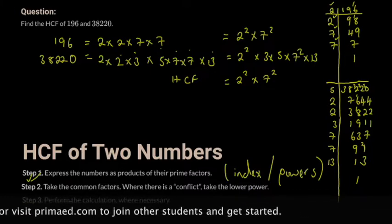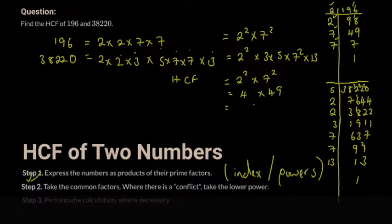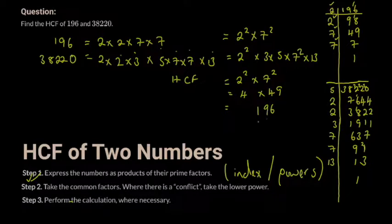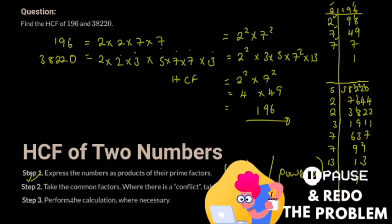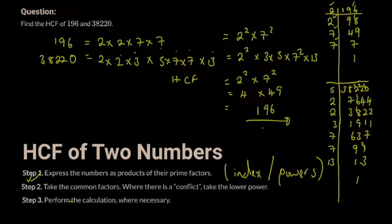The last step is to perform the calculation. Expand: 2² = 4 and 7² = 49. So 4 × 49: 4 × 9 = 36, carry 3; 4 × 4 = 16, plus 3 = 19. So we get 196. The HCF of 196 and 38,220 is 196. You can verify this on a calculator: 38,220 ÷ 196 = 195, confirming 196 is indeed a factor.